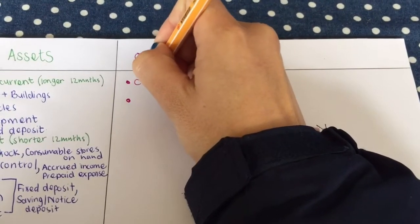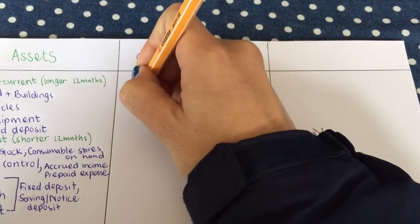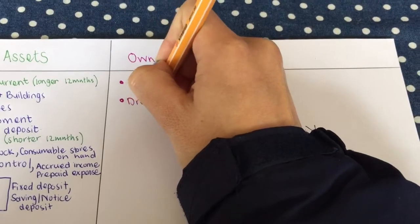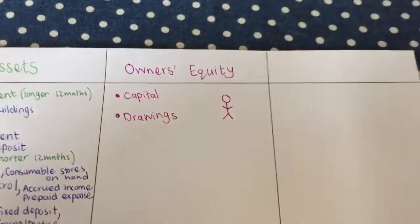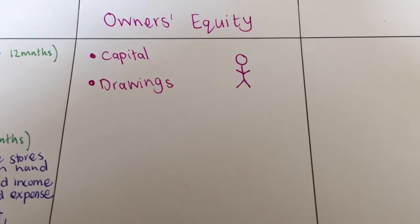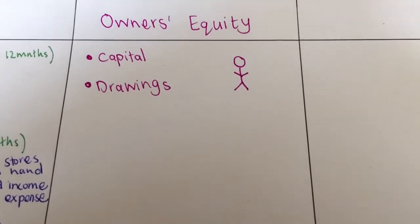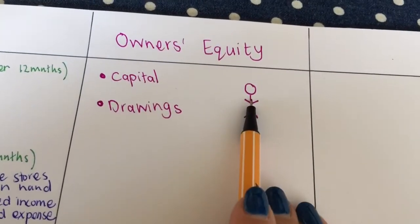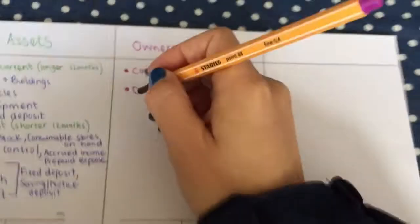My kids in my class are joking with me about my stick money figures that I'm drawing, but I think you get the picture. So the first one is then capital, and the second one is drawings. Those two accounts are not specifically classified as income or expenses. They are just linked to the owner, and you need to know that.